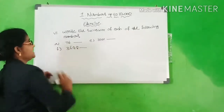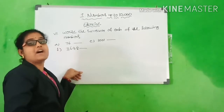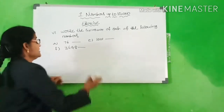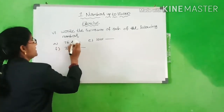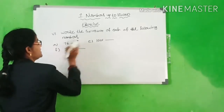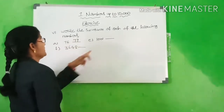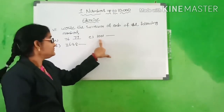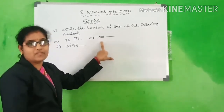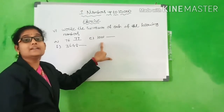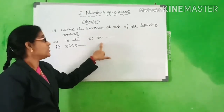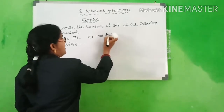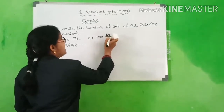A1: 76. What is the number after 76? What is the successor of 76? 77. And what is this number? 1001. What is the successor of 1001? 1002.